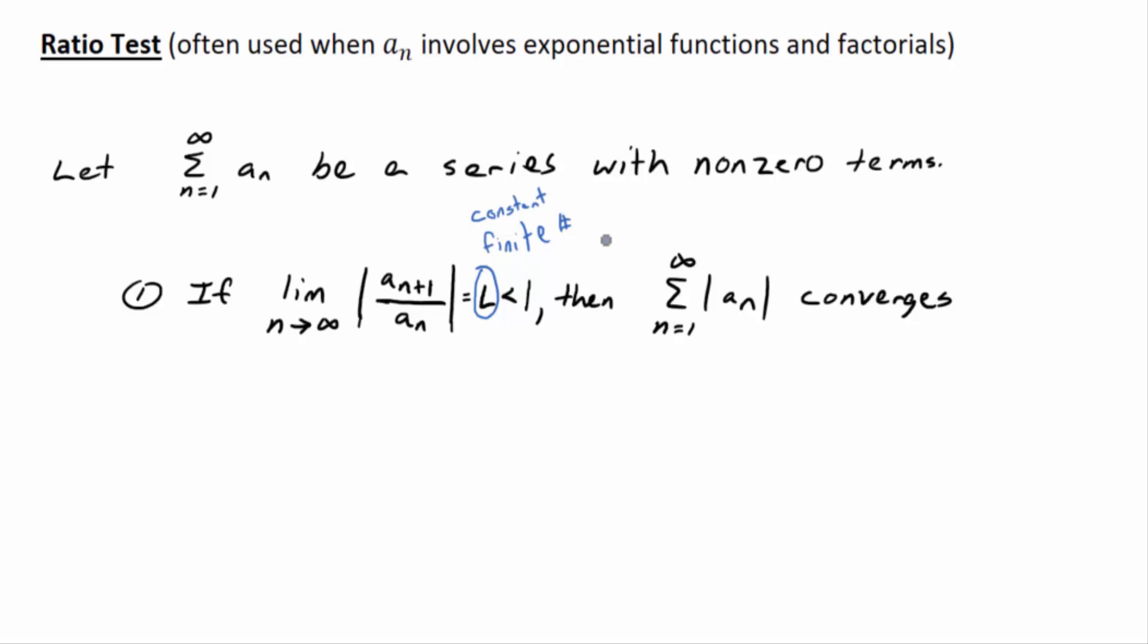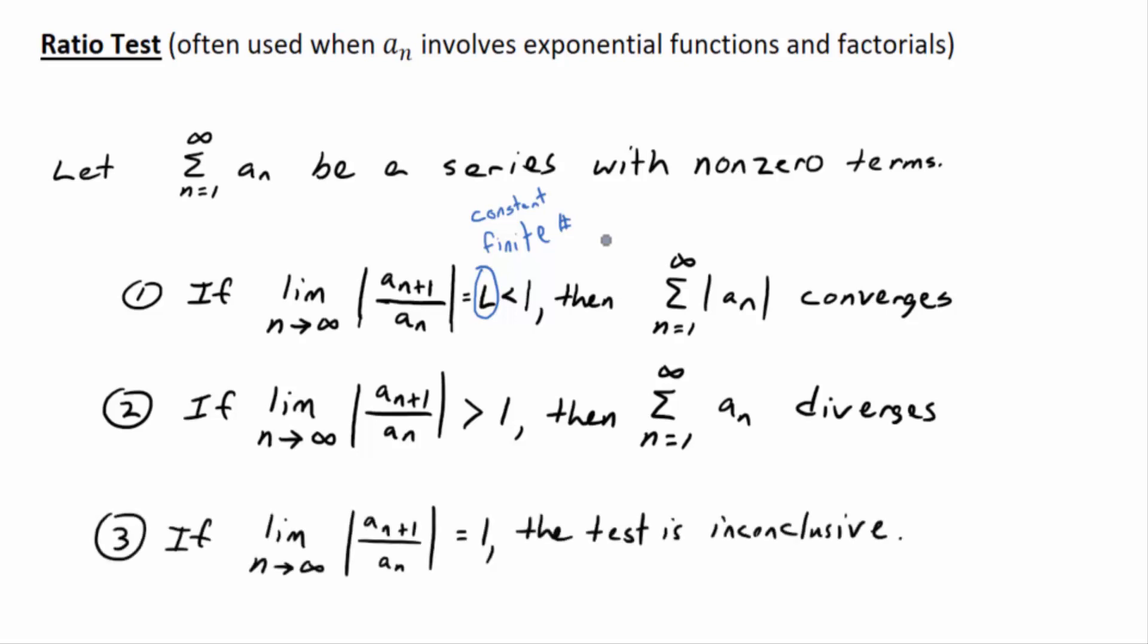That's what that part after the comma says. Then the sum of the absolute value of AN converges. That means it converges absolutely. And then number two, if that limit of the absolute value of the ratio AN plus 1 to AN is greater than 1, then the series diverges. And number three, if that limit of absolute value of AN plus 1 divided by AN equals 1, then the test doesn't tell you anything. It's inconclusive.